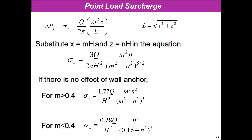If there is no wall effect and m is greater than 0.4, sigma_x equals 1.77Q / H² × m²n² / (m² + n²)³. If m is less than or equal to 0.4, sigma_x equals 0.28Q / H² × n² / (0.16 + n²)³.